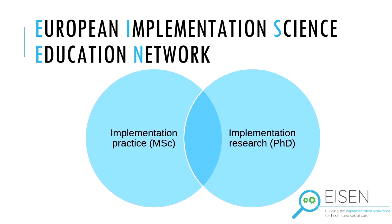The way that we have conceptualised our approach within the ISM programme is to think about implementation work within a master's degree framework, and implementation research within a doctoral level framework. Inevitably there will be some overlap of content between the two programmes, but essentially we're designing a master's degree programme which will really help people to develop advanced level skills and knowledge in the practice and art of implementation. Our PhD programme is very much focusing on the art, skills and techniques associated with implementation research. There is quite a significant overlap between the two, which is both challenging and interesting.